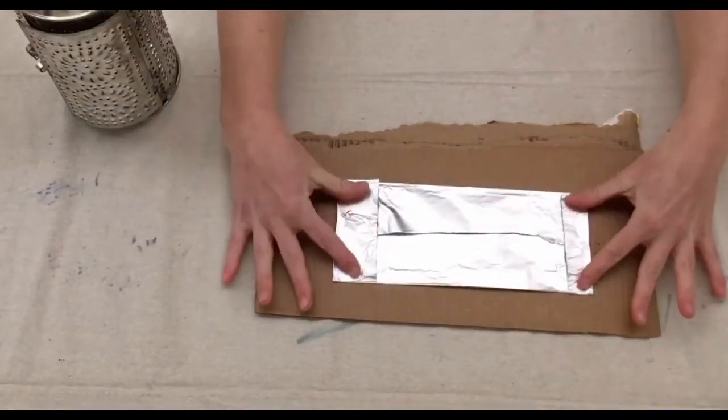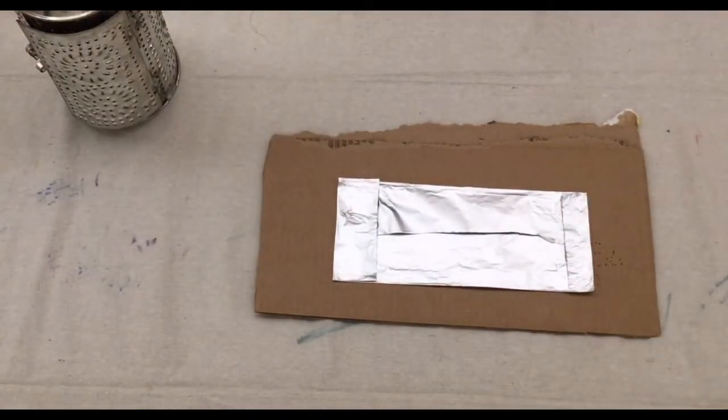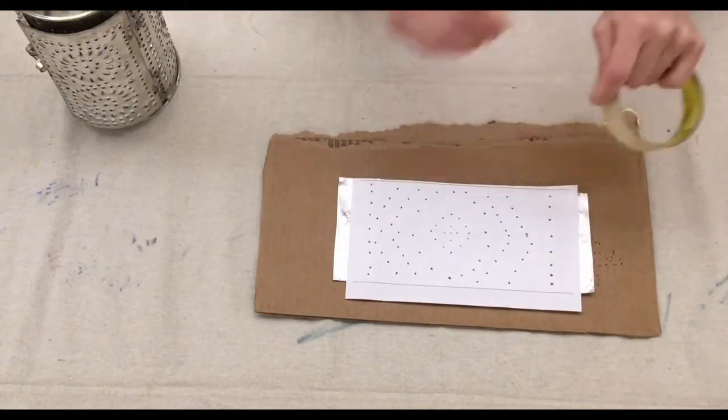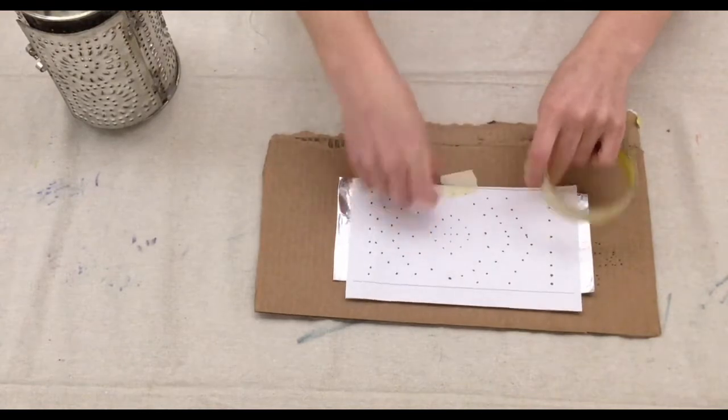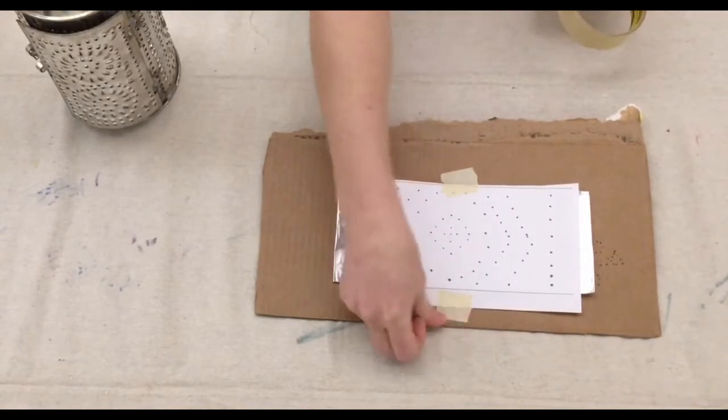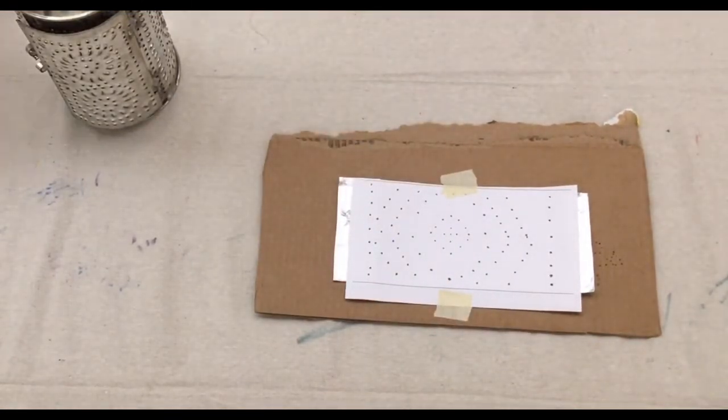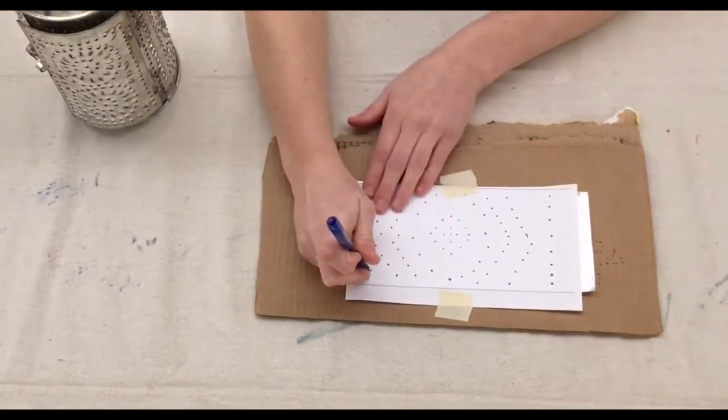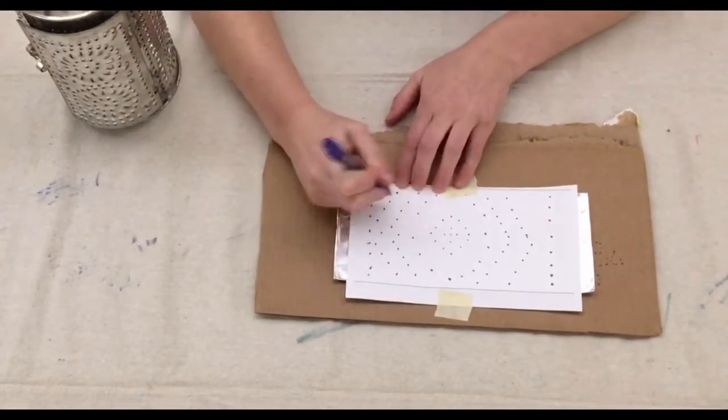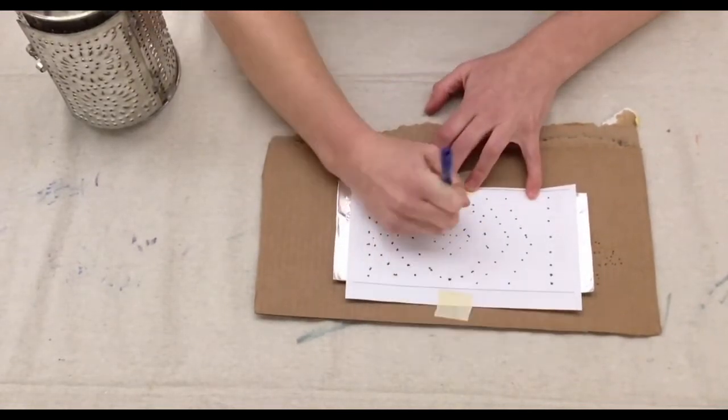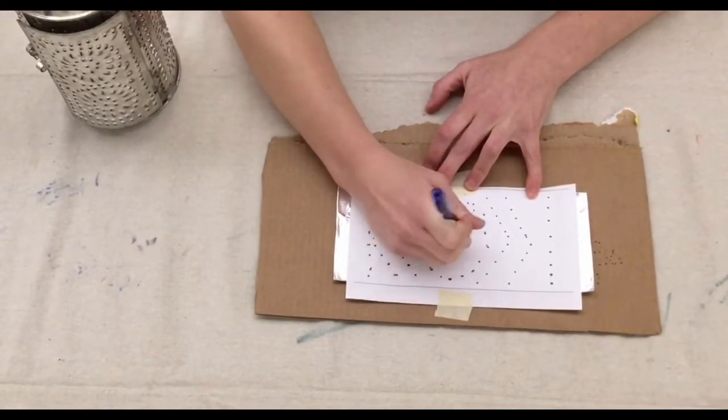I'm going to put my aluminum foil right in the middle of my piece of cardboard. Notice that I put the folded side facing up. Then I'm going to take my pattern and I'm going to put it right on top. I'm going to use a couple pieces of tape to secure the aluminum foil and the pattern to the cardboard. This way it doesn't move around when I'm punching holes in it. Then I'm going to take my pen and start punching holes into the aluminum foil. I'm going to go right through the paper and the aluminum foil all the way into the cardboard. I'm just going to follow the design and keep punching holes.